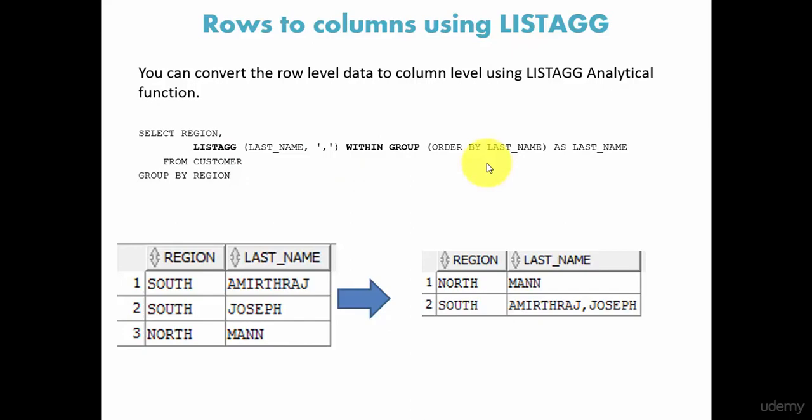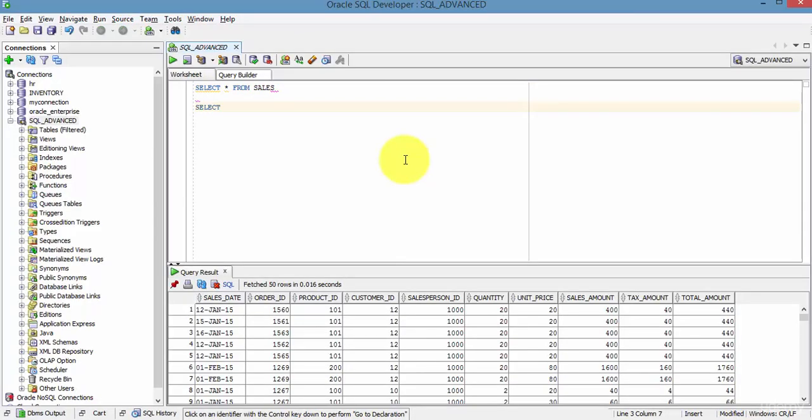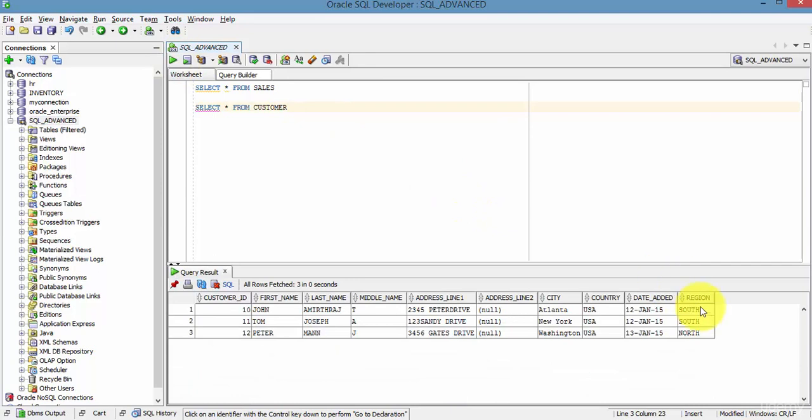So now let's go and check it out. Let's go to the customer table. These are all the columns we have. We have two customers for South and one customer for North. First, let's select the columns we need: region, last_name from customer.